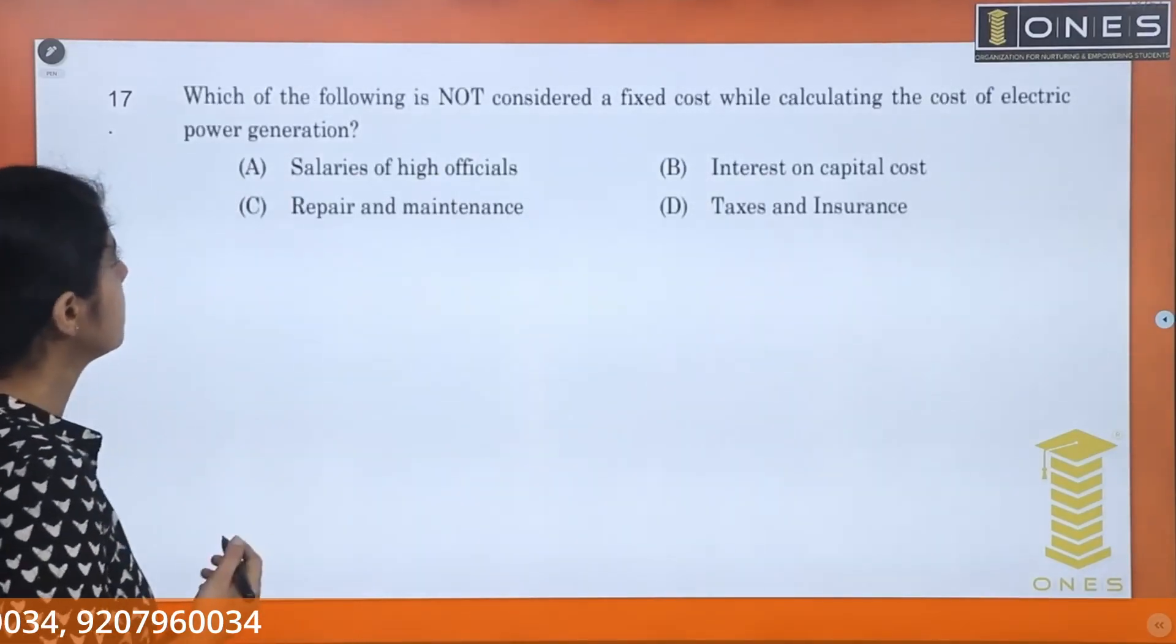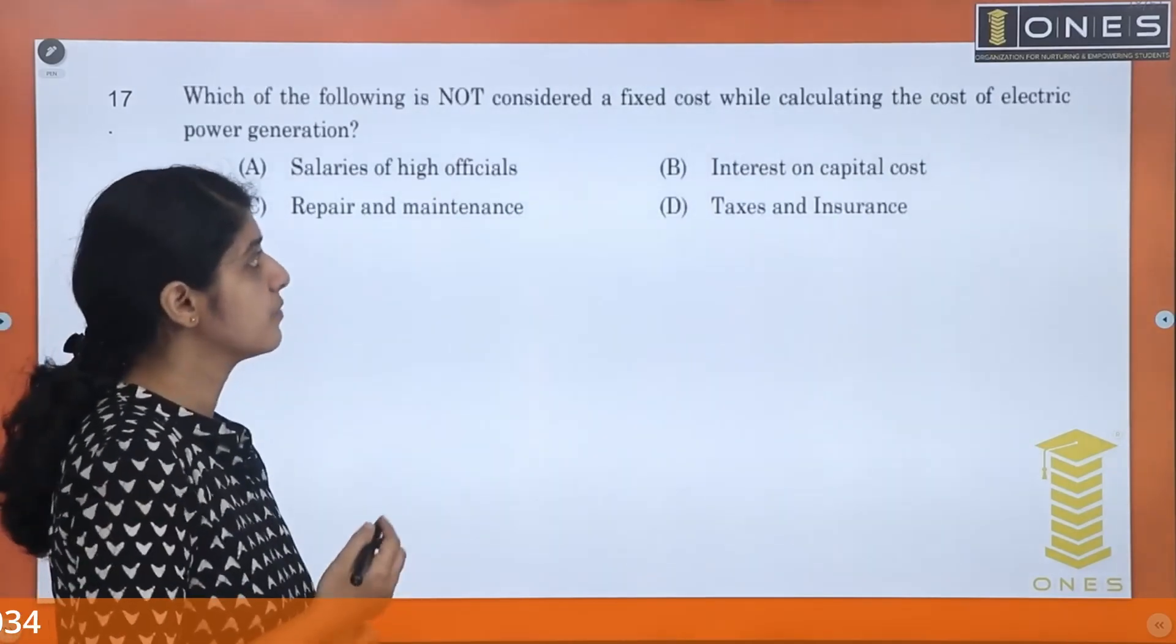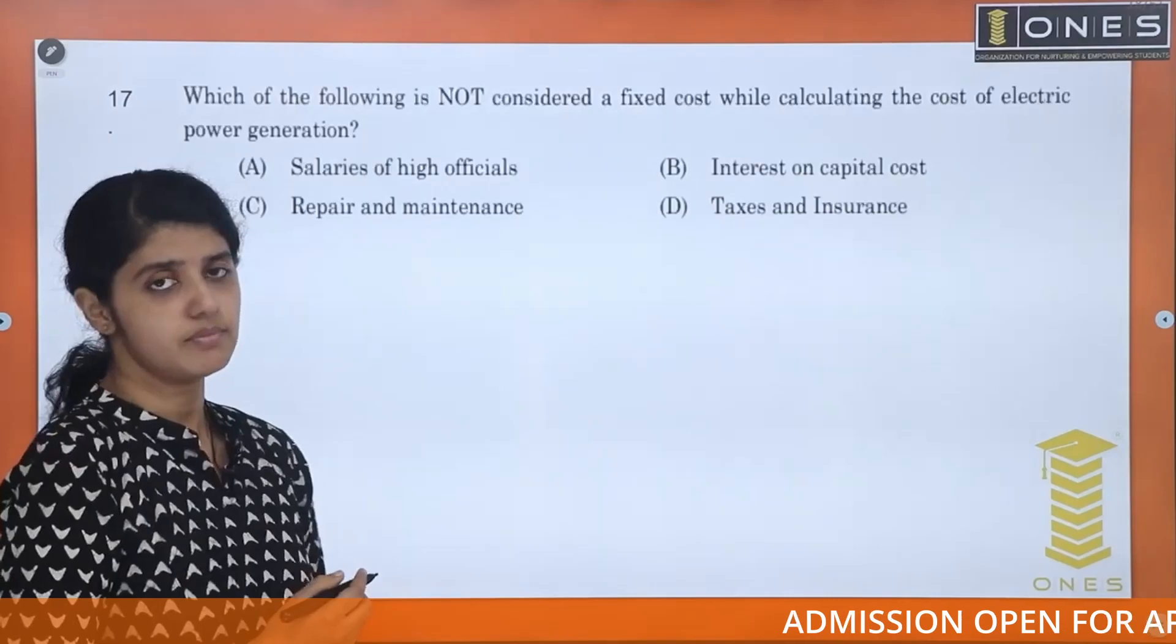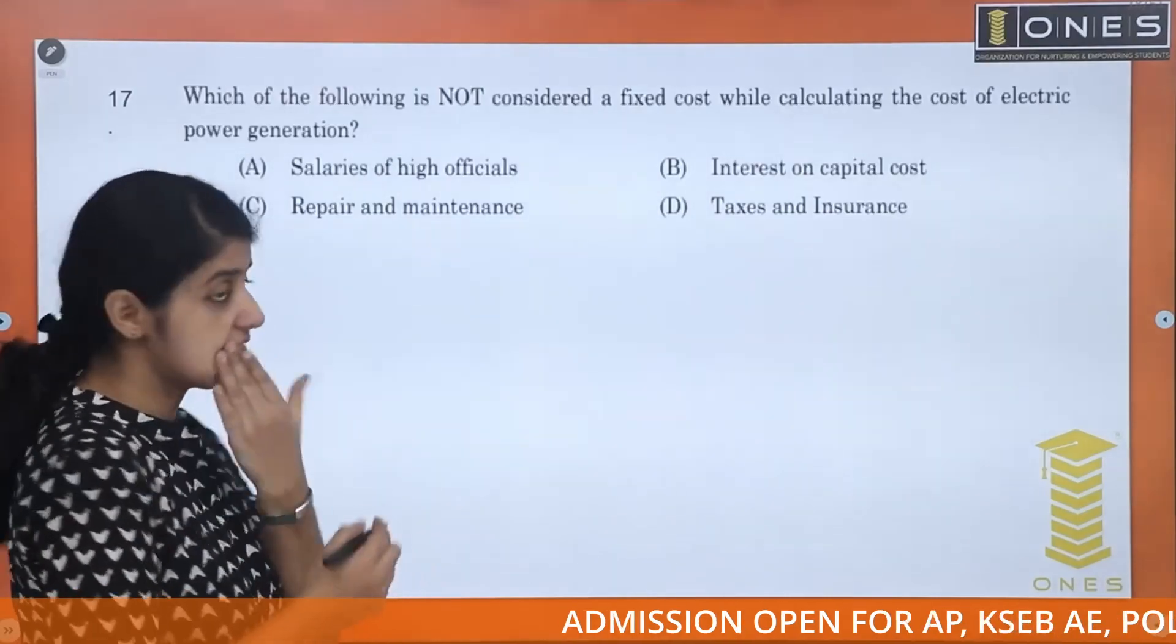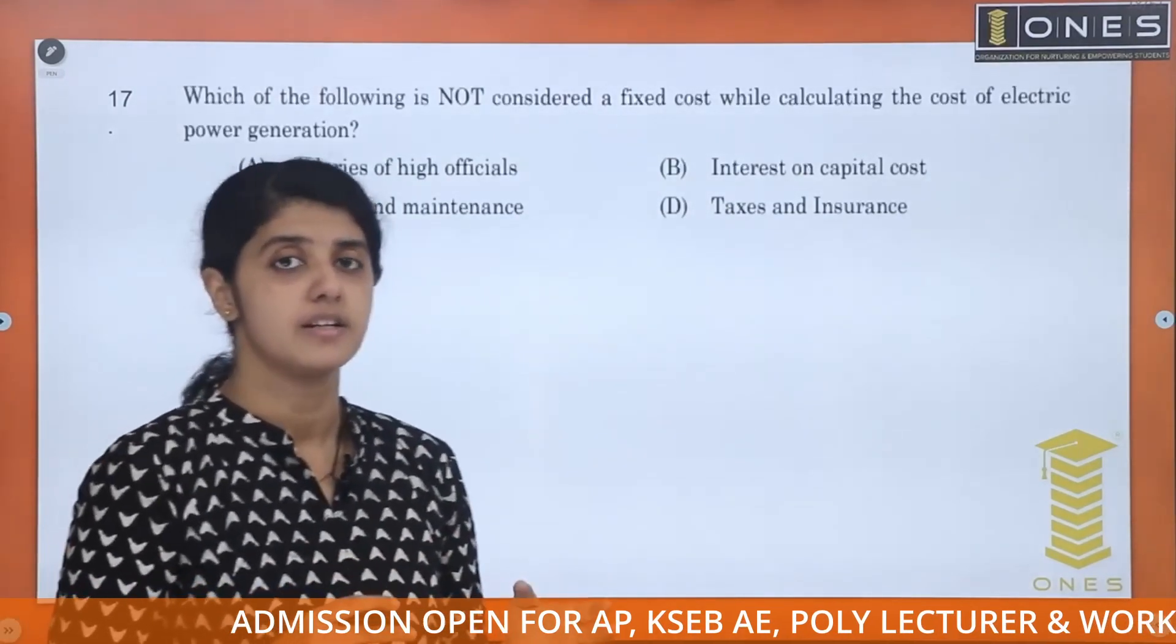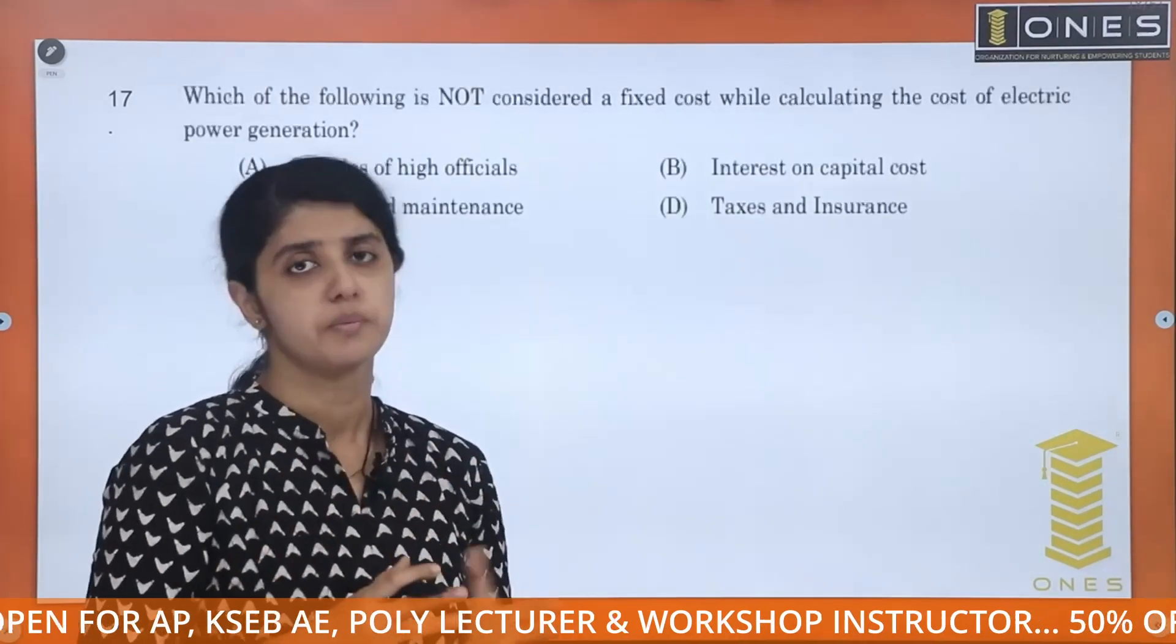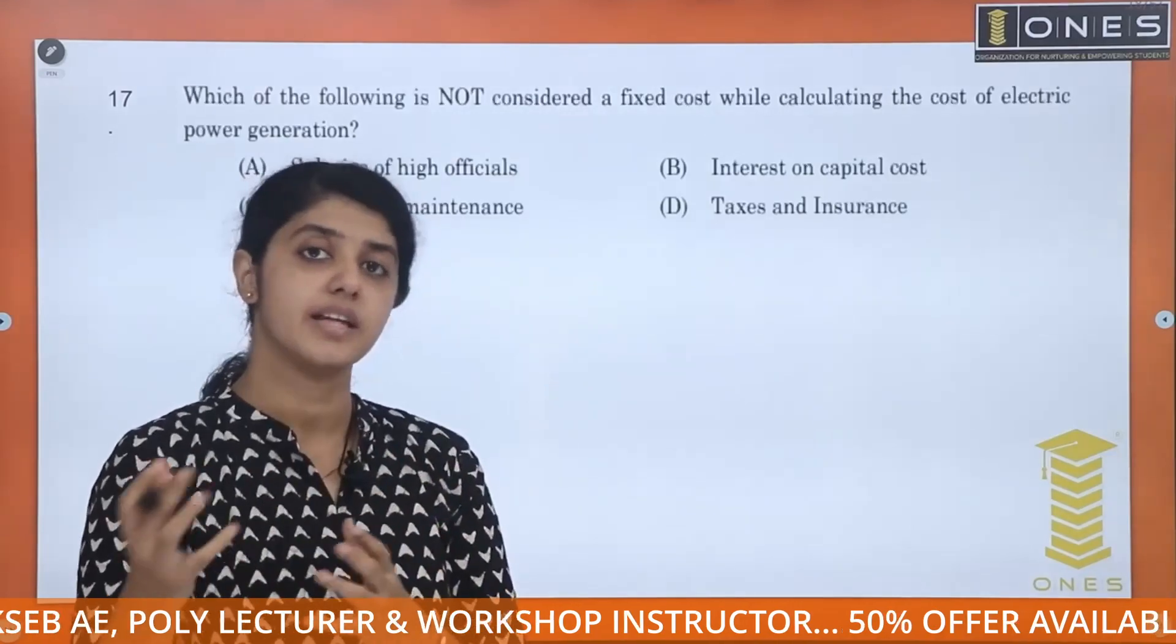Next question. Which of the following is not considered as fixed cost while calculating cost of electric power generation? We have to classify the fixed cost, KW, and KWH.